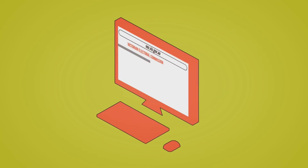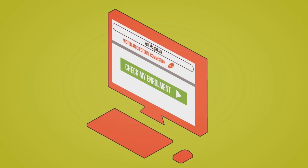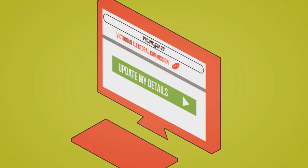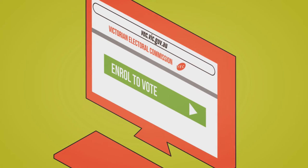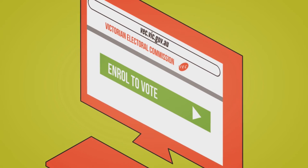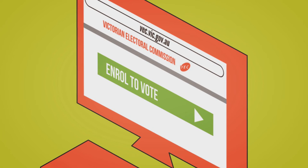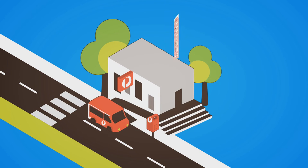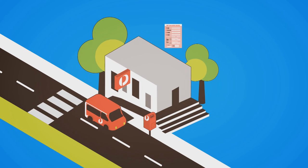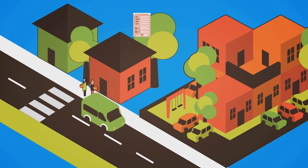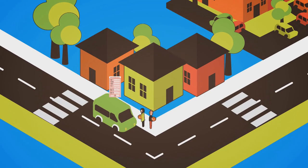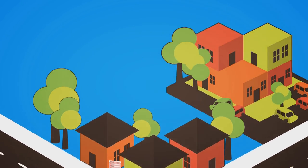Australian citizens aged 18 and over can check their enrolment, update their details, or enrol for the first time in less than five minutes, all online. If you prefer to enrol with a paper form, grab one from any post office. Remember, if you've moved or changed your name, you'll need to update your details as well.